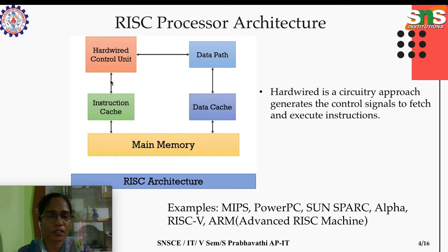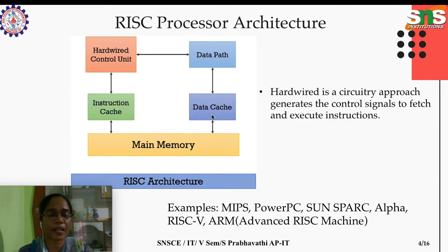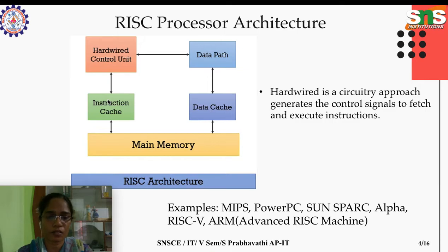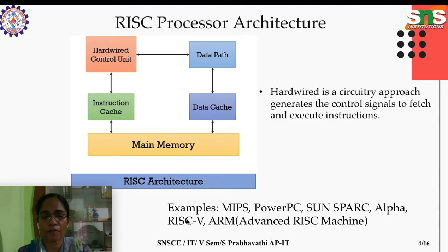After getting the instruction, it needs to be interpreted. If it requires an operand, that path is followed to get the operand value from either memory or the data cache. Some processors using RISC architecture include MIPS, PC, Sun SPARC, Alpha, RISC-V, and ARM (Advanced RISC Machine).